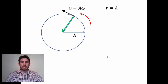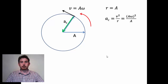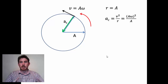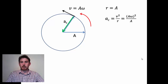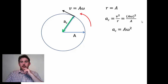If an object is following a circular path then it has to have a centripetal acceleration, represented by the green arrow, labelled as AC. We can calculate the centripetal acceleration — you might remember that's V² over R. Since V is equal to amplitude omega, V² equals (Aω)² divided by R, where R is also the amplitude A. This allows us to cancel one of the amplitudes, and the centripetal acceleration becomes Aω².